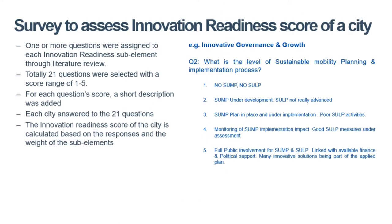As mentioned in a previous module, the innovative urban mobility ecosystem consists of elements and sub-elements concerning innovation readiness and liveability. The innovation readiness sub-element can help to capture whether a city is capable and ready in deploying or enabling the deployment of new mobility innovations. To assess the innovation readiness of a city, one or more questions are assigned to each innovation readiness sub-element with a descriptive range from 1 to 5.